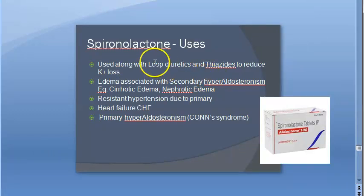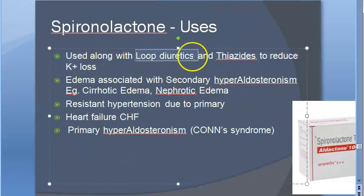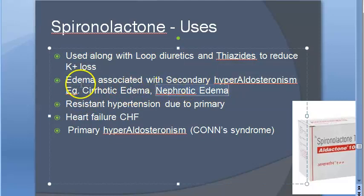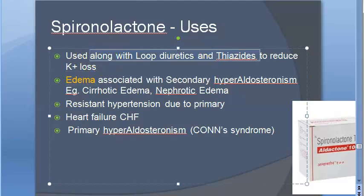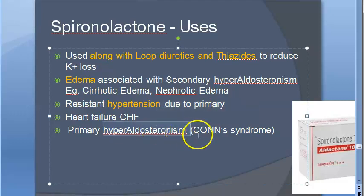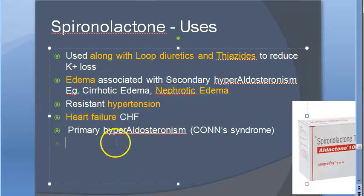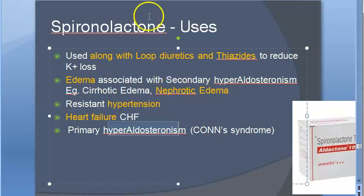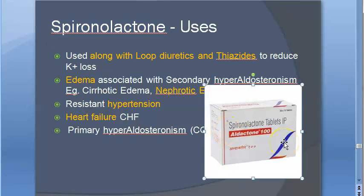The uses of spironolactone: it is used along with loop diuretics and thiazides to reduce potassium loss. It is used to treat edema — specifically nephrotic edema and cirrhotic edema associated with hyperaldosteronism. It is used to treat hypertension, specifically resistant hypertension due to primary aldosteronism. It is also used in heart failure to reduce the load on the heart. And it is used in Conn's syndrome, where there is primary hyperaldosteronism — you can give an aldosterone antagonist like spironolactone.